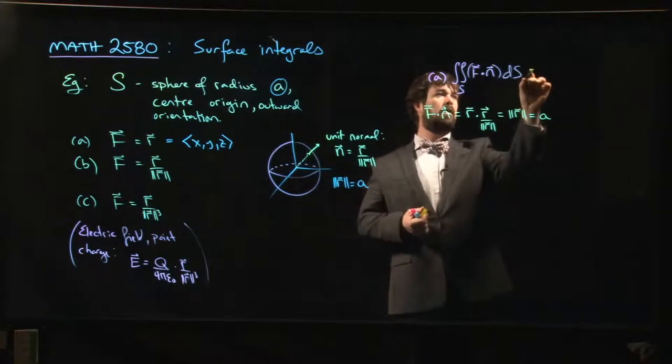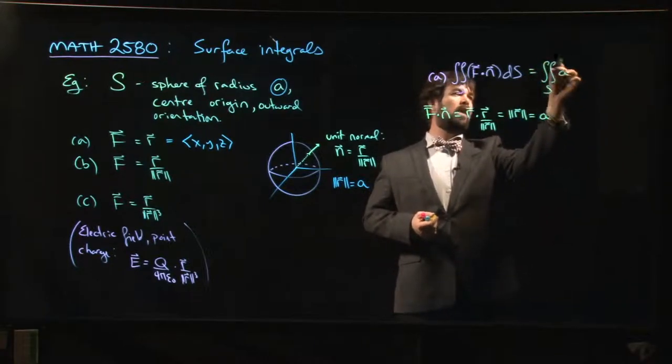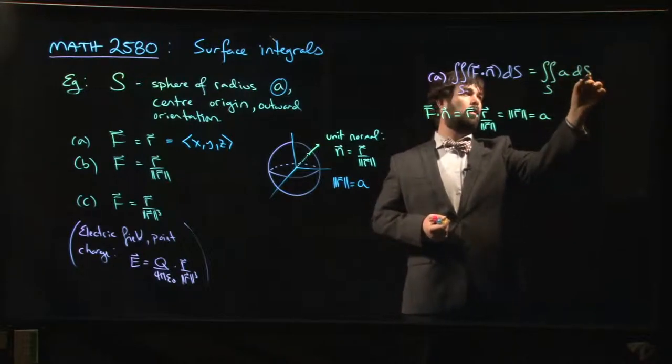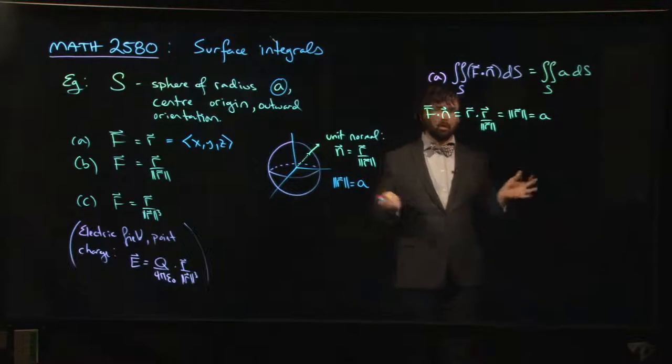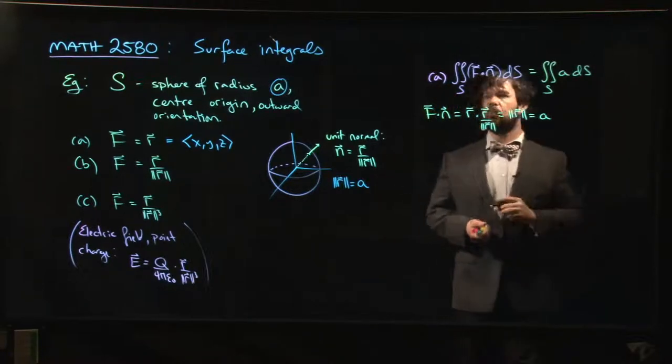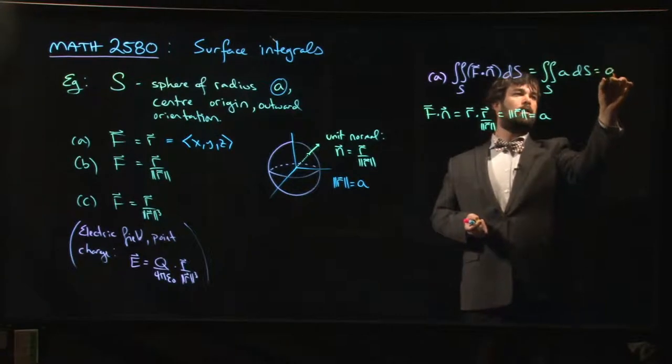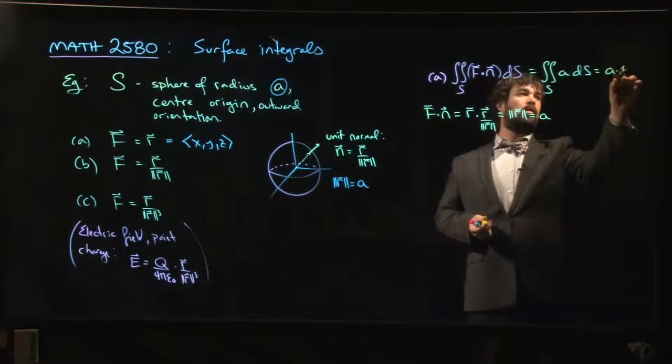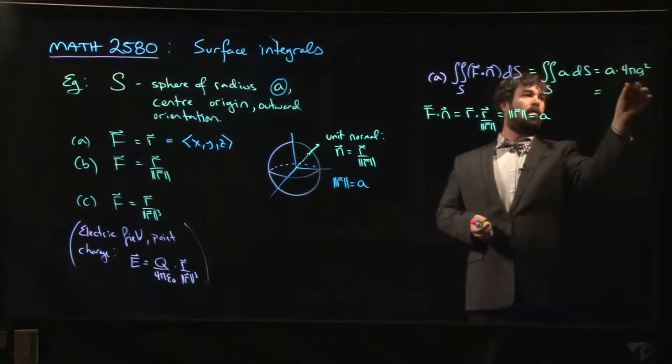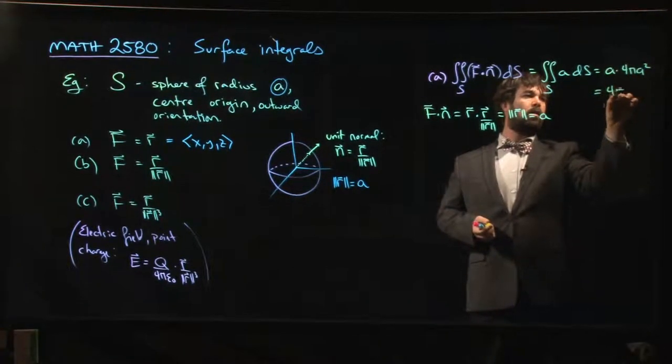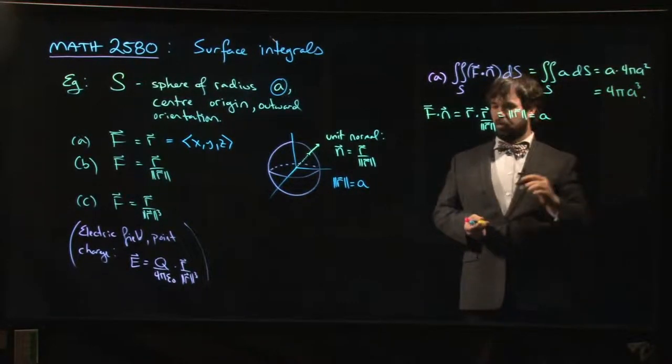This is simply the integral over the sphere of A with respect to S. And A is just a constant, so this is a constant times the surface area. It's A times 4 pi A squared. So we get 4 pi A cubed.